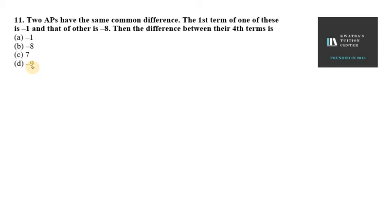Hello everyone. Let's start with question number 11. So it says two APs have the same common difference. The first term of one of these is minus 1 and that of other is minus 8. Then the difference between their fourth term is.